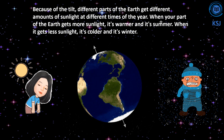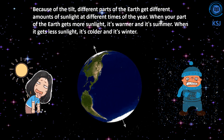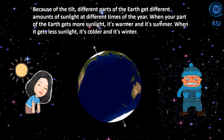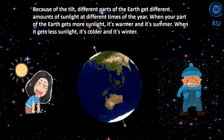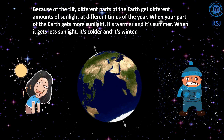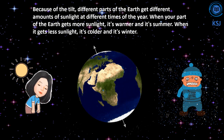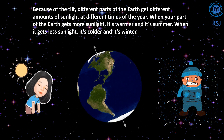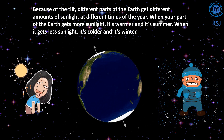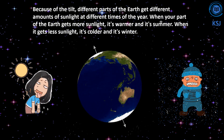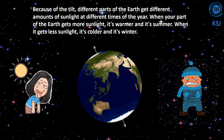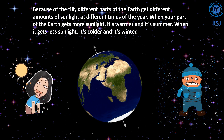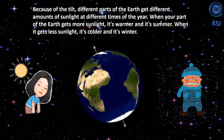Because of the tilt, different parts of the earth get different amounts of sunlight at different times of the year. When your part of the earth gets more sunlight, it's warmer and it's summer. When it gets less sunlight, it's colder and it's winter.